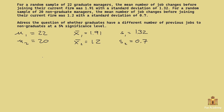Now let's state the null and alternative hypotheses. The question asks whether graduates have a different number of previous jobs, so we assume there is no difference: H0 is mu1 equals mu2. The alternative hypothesis is that there is a difference, so H1 is mu1 not equal to mu2.